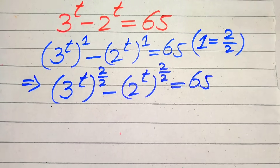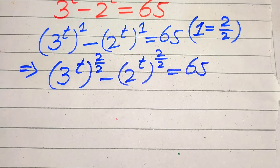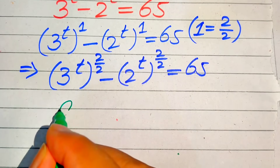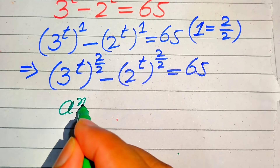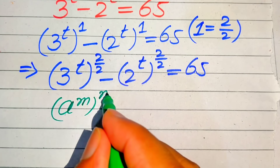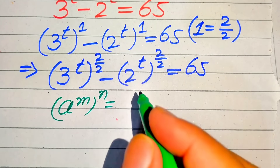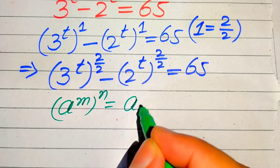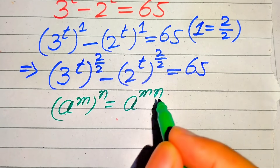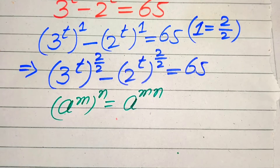In the next step we apply the exponential law: if we have a to the power of m to the power of n, it is written as a to the power of m multiplied by n.